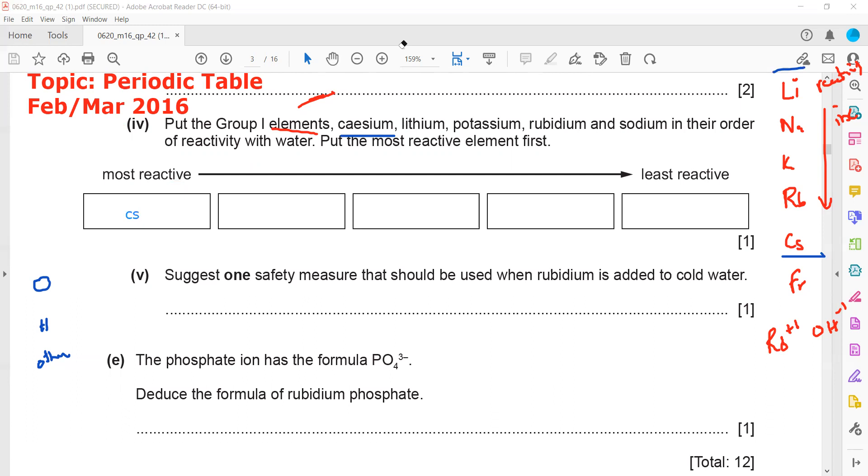So cesium is there, rubidium, and the first letter should be capital, potassium, sodium, and the last one is Li or lithium.